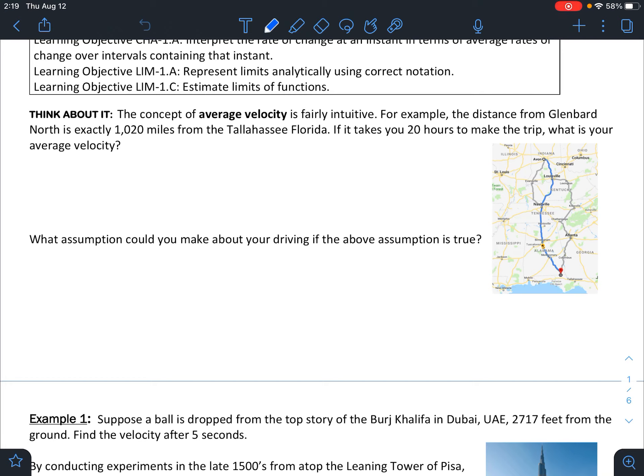Well, average velocity, remember the old equation distance equals rate times time. Rate would just be distance over time. So our velocity here is going to be our distance divided by our time. And if you get 1,020 divided by 20, you get our average velocity is 51 miles per hour.